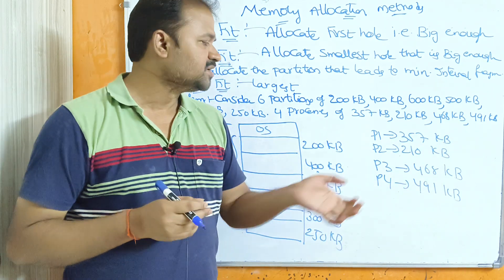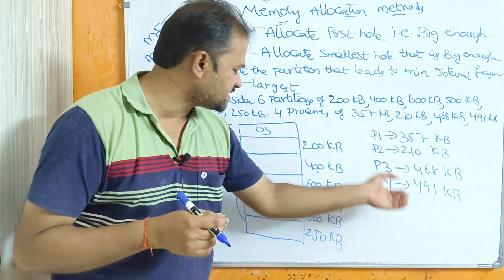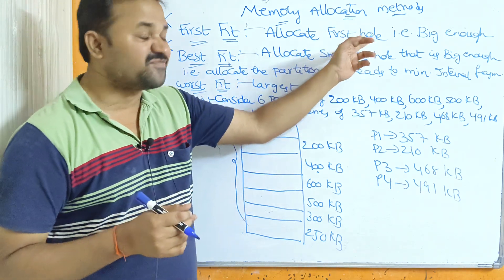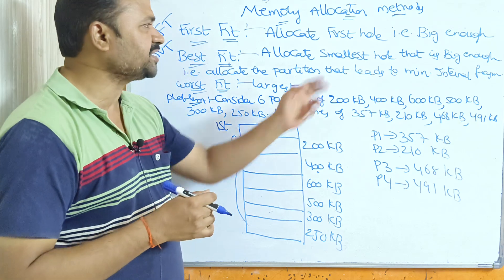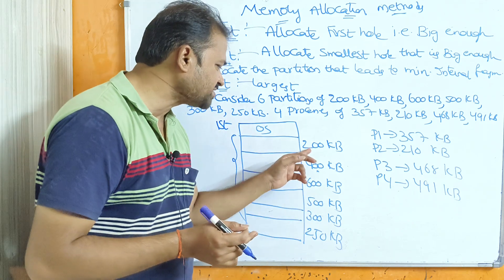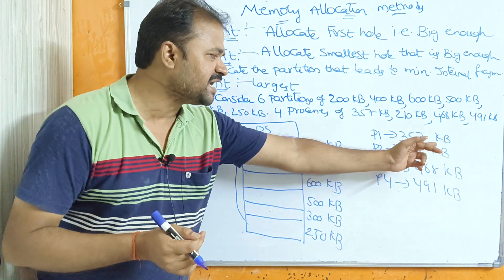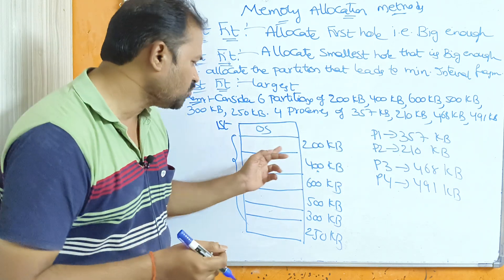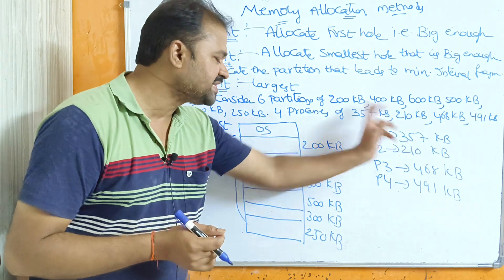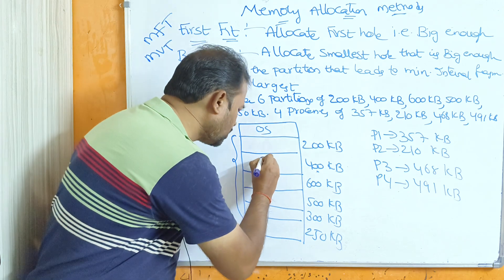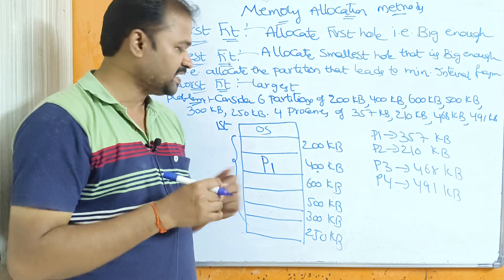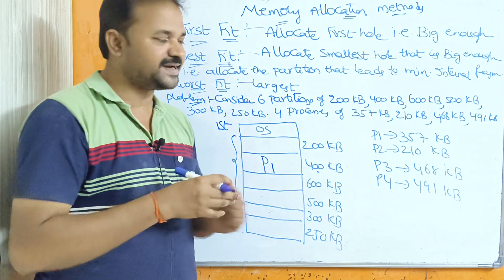Our target is to store these four processes in the main memory using these three techniques. For first fit, we allocate the first partition that is big enough. P1 size is 357 KB. The first partition is 200 KB — we can't store 357 KB there. The next partition is 400 KB, so we can store P1 in the 400 KB partition, as 400 is the first partition that is big enough.